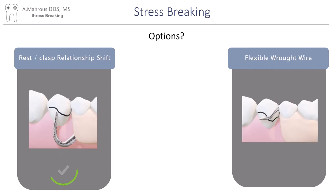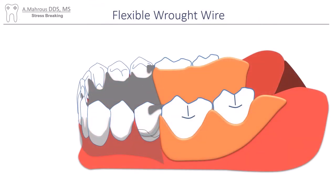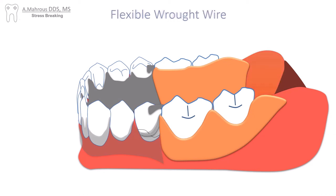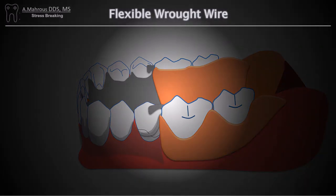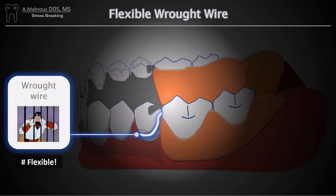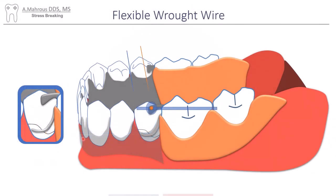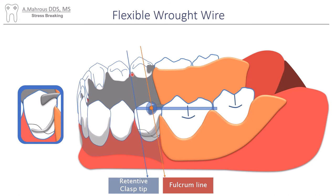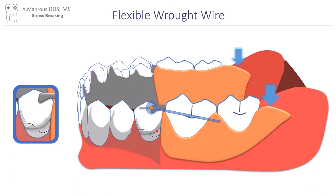Now let's talk about the flexible wrought wire clasp. Consider the same class 1 RPD, but instead of a CC clasp, we'll use a wrought wire clasp. In this case we're not changing the clasp-rest relationship, just the material. Wrought wire is flexible, so despite the fulcrum line and clasp tip remaining in the same locations, the flexibility makes the forces dissipate and the tooth therefore does not receive any excessive stress.